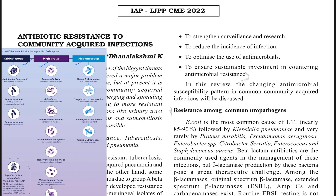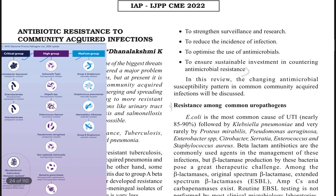What is sad is that many community acquired organisms are also included in this group. In the critical category, we have Acinetobacter, third-generation cephalosporin-resistant Enterobacteriaceae, and carbapenem-resistant Enterobacteriaceae. Enterobacteriaceae can also be community acquired — for example, urinary tract infections. In the high risk group, we have typhoid, Shigella, and non-typhoidal Salmonella, which are all community acquired.